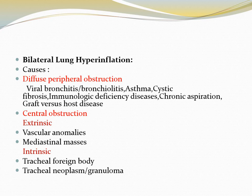Bilateral lung hyperinflation causes include either diffuse peripheral obstruction or central obstruction. Diffuse peripheral obstruction includes viral bronchitis, bronchiolitis, asthma, cystic fibrosis, immunologic deficiency disease, chronic aspiration, and graft-versus-host disease. Central obstruction is either extrinsic — vascular anomaly, mediastinal masses — or intrinsic — tracheal foreign body, tracheal neoplasm, or granuloma.